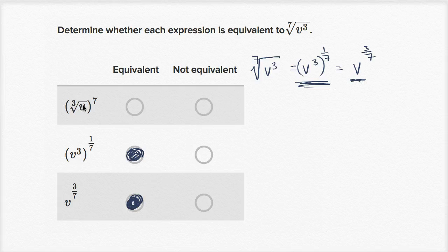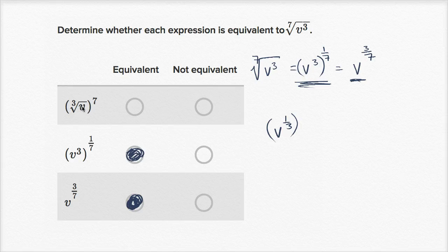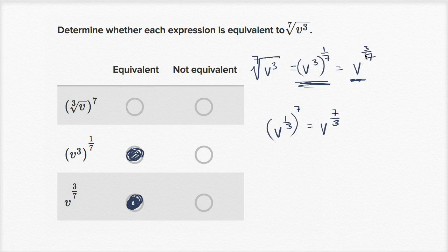Now let's think about this one — the cube root of v and that to the seventh power. Is this going to be equivalent? That's the same thing as v to the one-third power, and then that to the seventh power. So that is the same thing as v to the seven-thirds power, which is clearly different from v to the three-sevenths power. So this is not going to be equivalent.